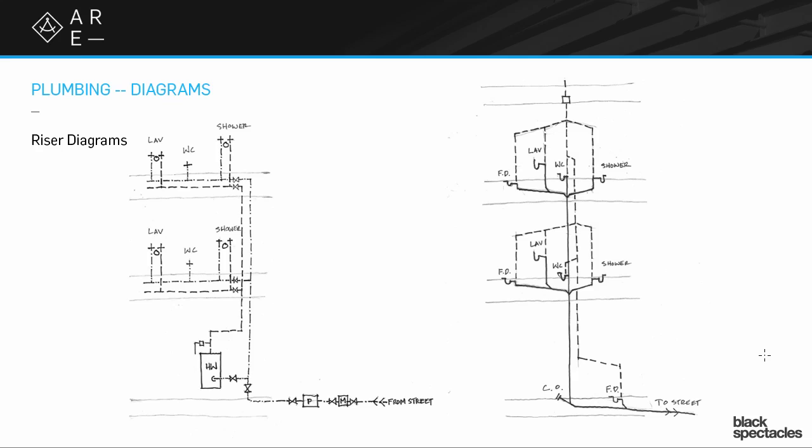The typical way plumbing pipes are shown on contract documents is through the riser diagram. Sometimes you'll see it as one diagram with both the waste system and the supply system overlapping. If the building gets complicated with multiple levels, different bathrooms, kitchens, and floor drains, it can get quite complicated, so overlapping them tends to not be useful, and you'll often see them separated unless it's a very simple building.